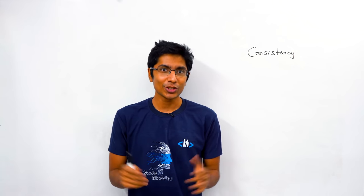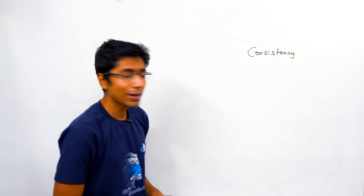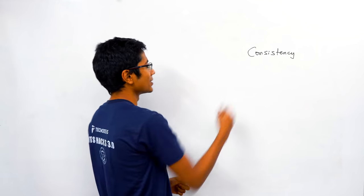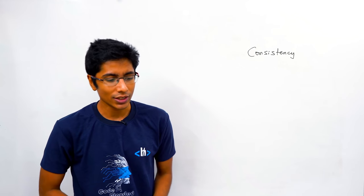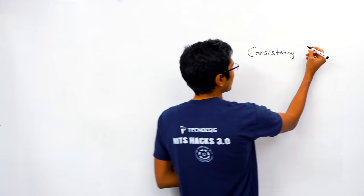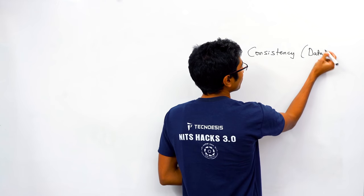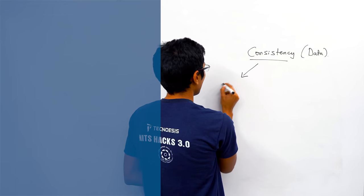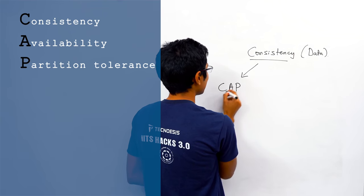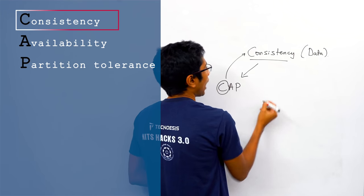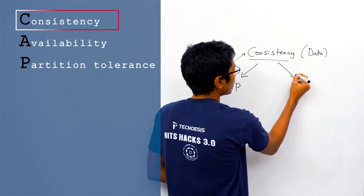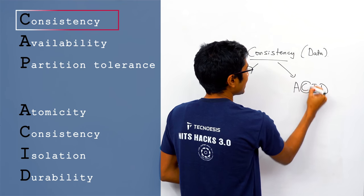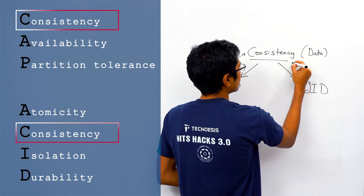Hi everyone, this is GKCS. Today's topic is a very important one — it comes up often in distributed systems and it's called consistency. Consistency is usually related to data, and you'll hear this topic come up often, whether it's the CAP theorem where C stands for consistency, or in database transactions, where C again stands for consistency.